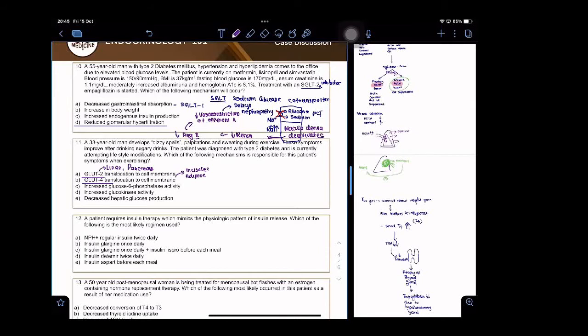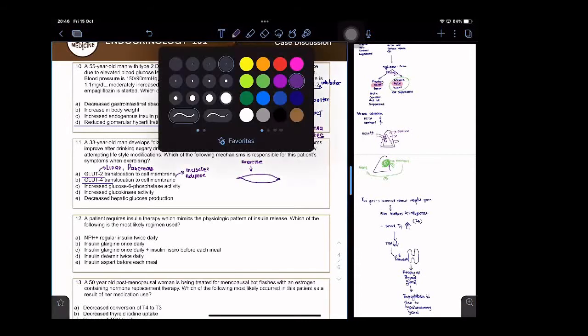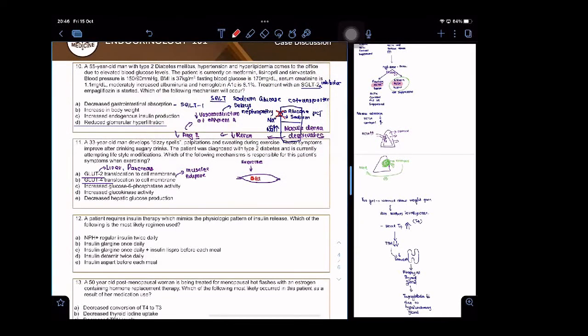Now, this patient has palpitations and sweating and dizzy spells during exercise. What happens is, our muscles, when a person is exercising, is going to send these GLUT4 to the surface. It's going to send them to the surface like this to bring in glucose.